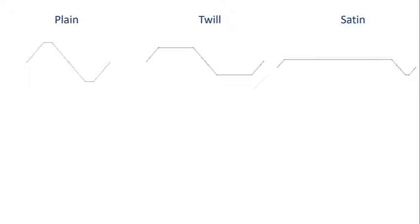We design our control curves using NURBS by moving the position of control points based on the weaving patterns for plain, twill, and satin.